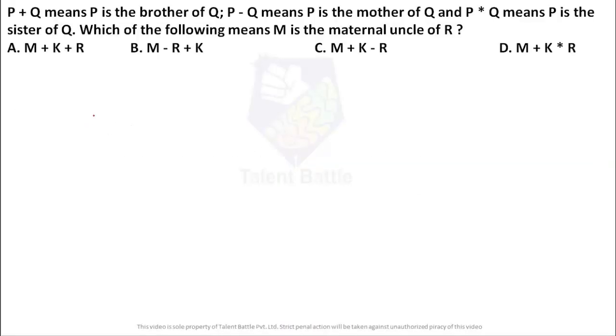This particular question was asked by Shubham from DKT College Isalkaranji. The question is: P plus Q means P is the brother of Q. P minus Q is P is mother of Q. P star Q means P is the sister of Q. Then which of the following means M is maternal uncle of R. So this question belongs to blood relation topic. So for which you can draw the diagram and you can solve the question.